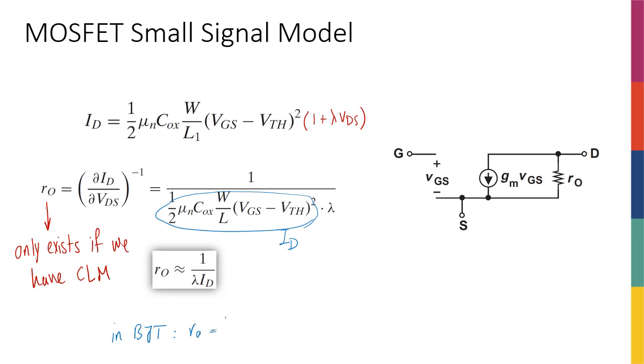Now the difference is that in BJT, the only thing that was actually setting my R naught was the bias current of my transistor and the early voltage, which was given to me and was really outside of my control. But here, as I mentioned before, this is really because lambda is proportionate to 1/L. This really means that 1 over λID is really proportionate to L over ID. So not only I can control this by changing the current, I can actually control it by changing the L, because the higher L, the smaller lambda, the smaller lambda means the larger R naught I'm going to have.